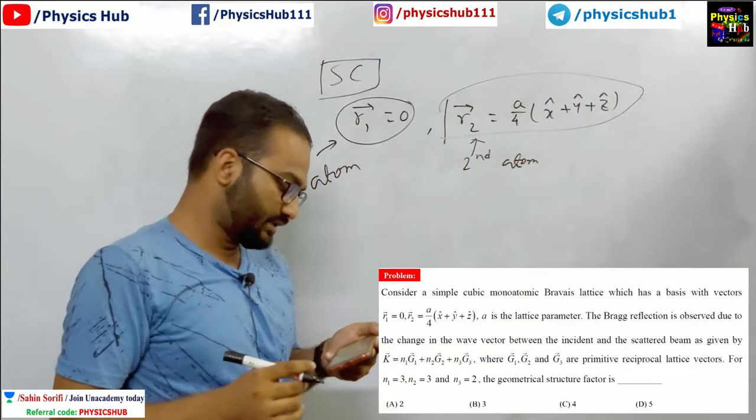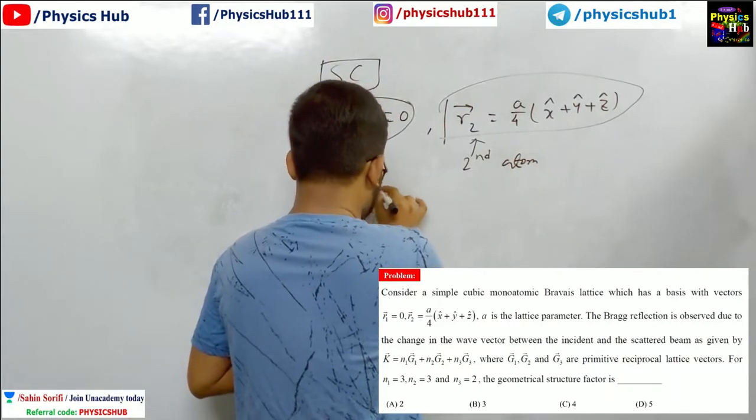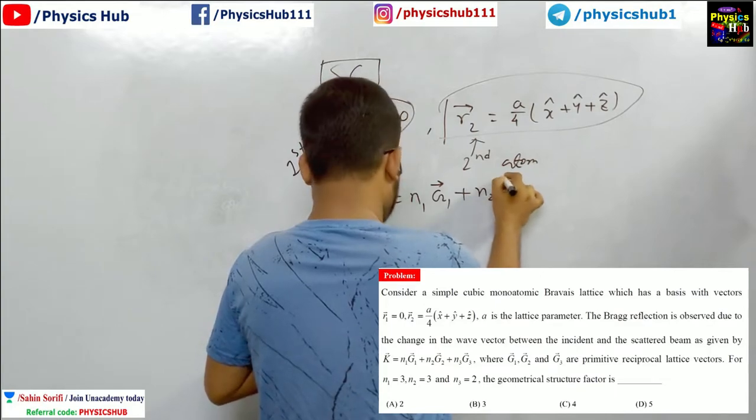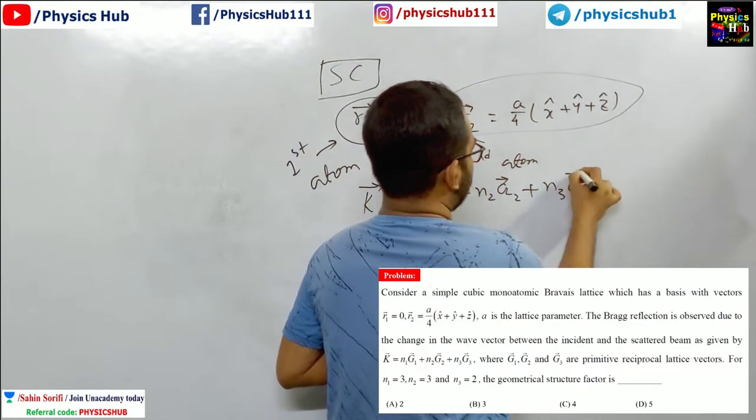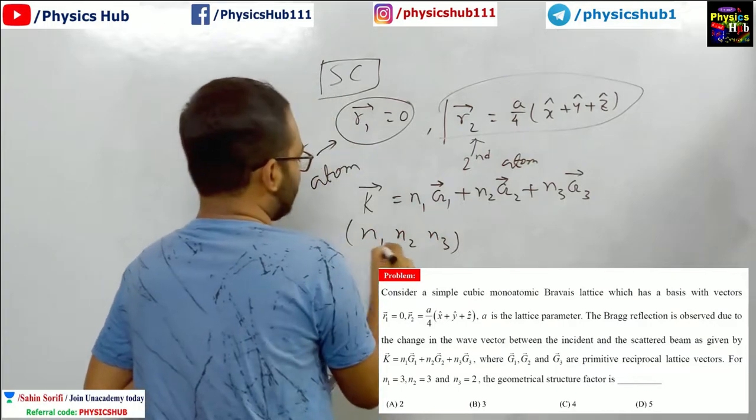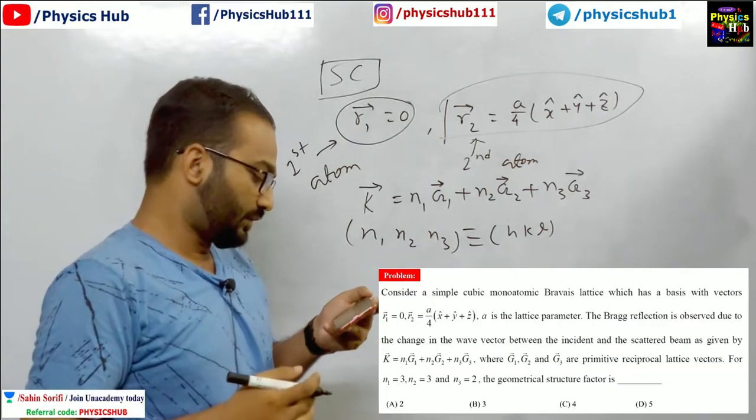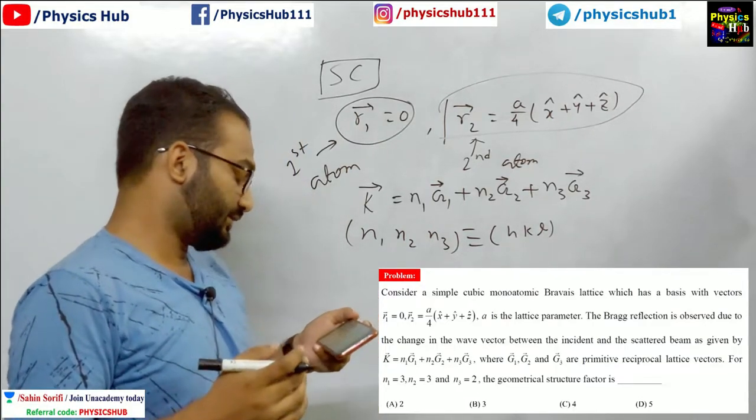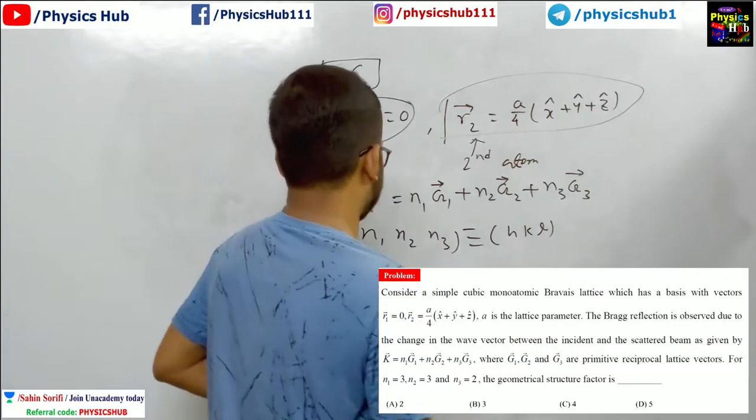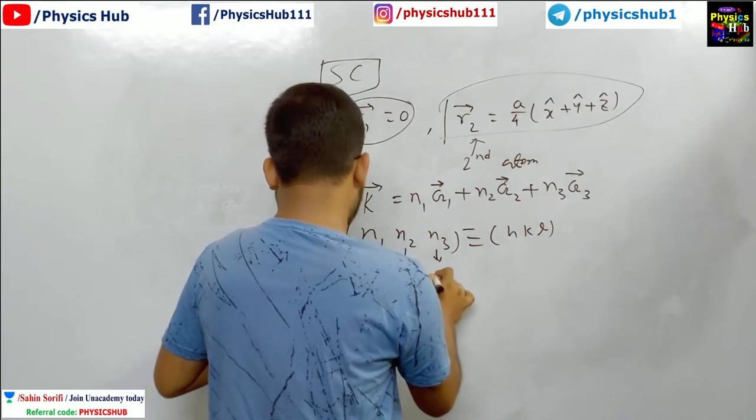The Bragg reflection is observed due to the change in the wave vector between the incident and the scattered beam as given by k equals n₁g₁ + n₂g₂ + n₃g₃. So here you see this n₁, n₂, n₃ - these are equivalent to h, k, l values. So we can easily put it into the formula. g₁, g₂, g₃ is the primitive reciprocal lattice vector. For n₁ equals 3, n₂ equals 3, and n₃ equals 2, what will be the value of the geometrical structure factor? These values are given.